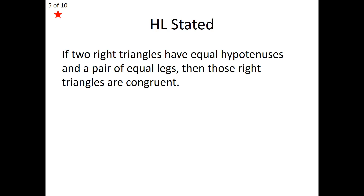Let's move now into HL, which stands for hypotenuse leg. If two right triangles have equal hypotenuses and a pair of equal legs, then those right triangles are congruent. You may be thinking that our magic shortcut was three things, and HL only has two. Well, not really — this is a special case. Notice something already special about our two triangles: we're given two right triangles. So that's one condition. Then you have an equal pair of hypotenuses — a second condition. And then a pair of equal legs — that is a third condition. So that is our magic number three: right triangles, equal hypotenuses, equal legs. Even though HL only has two letters in the shortcut name, it still has our magic number three.